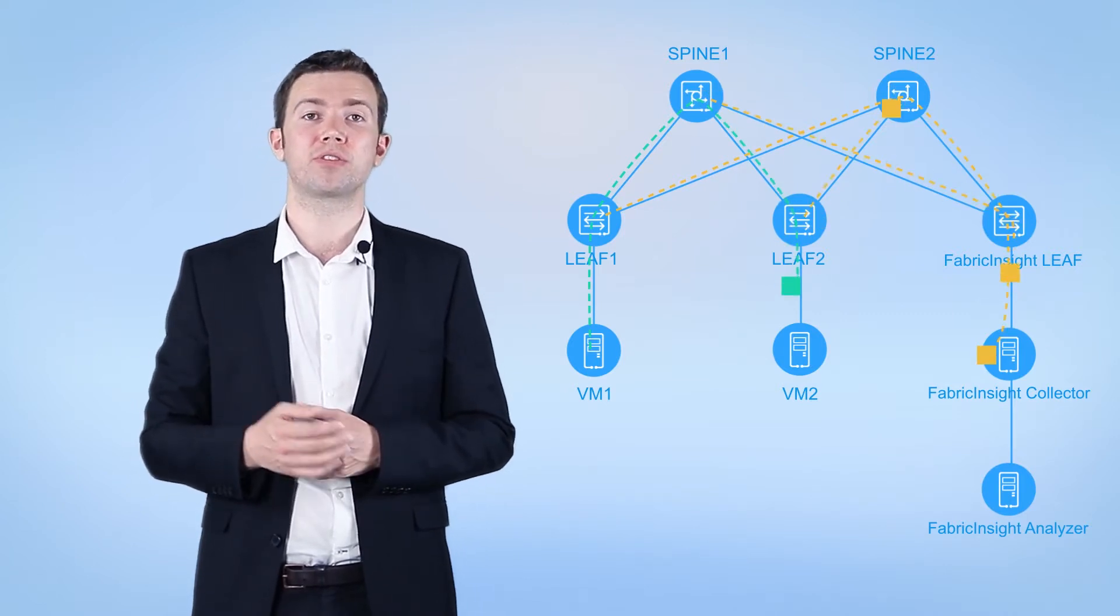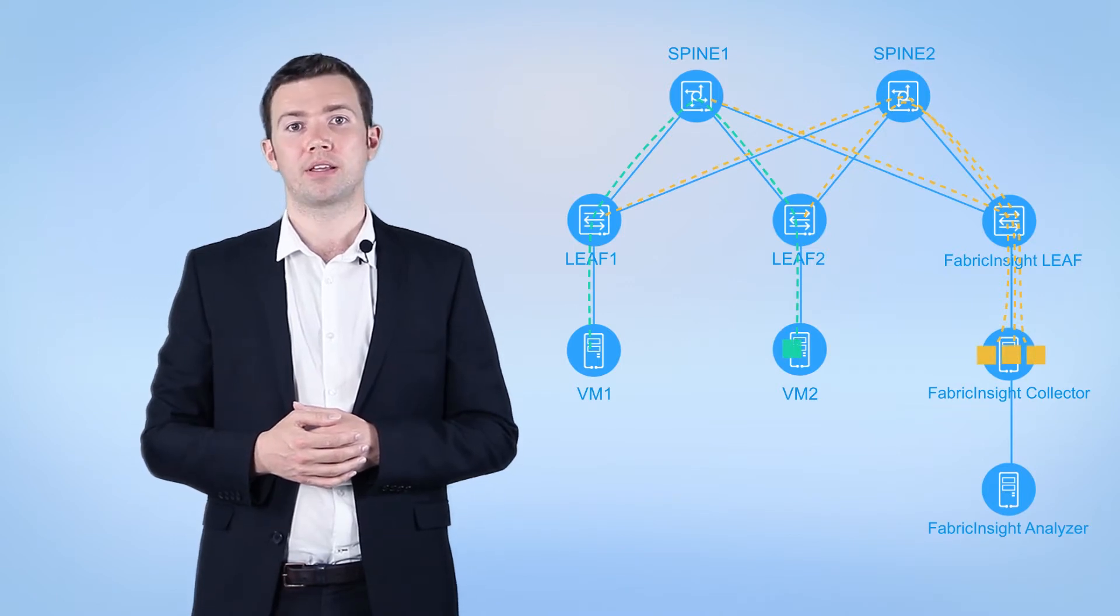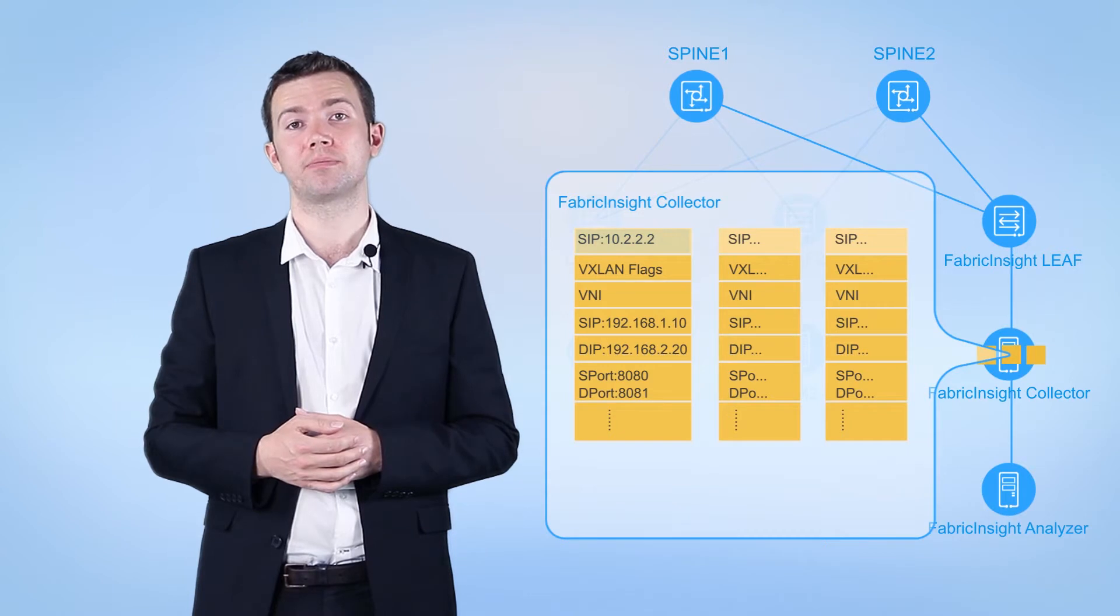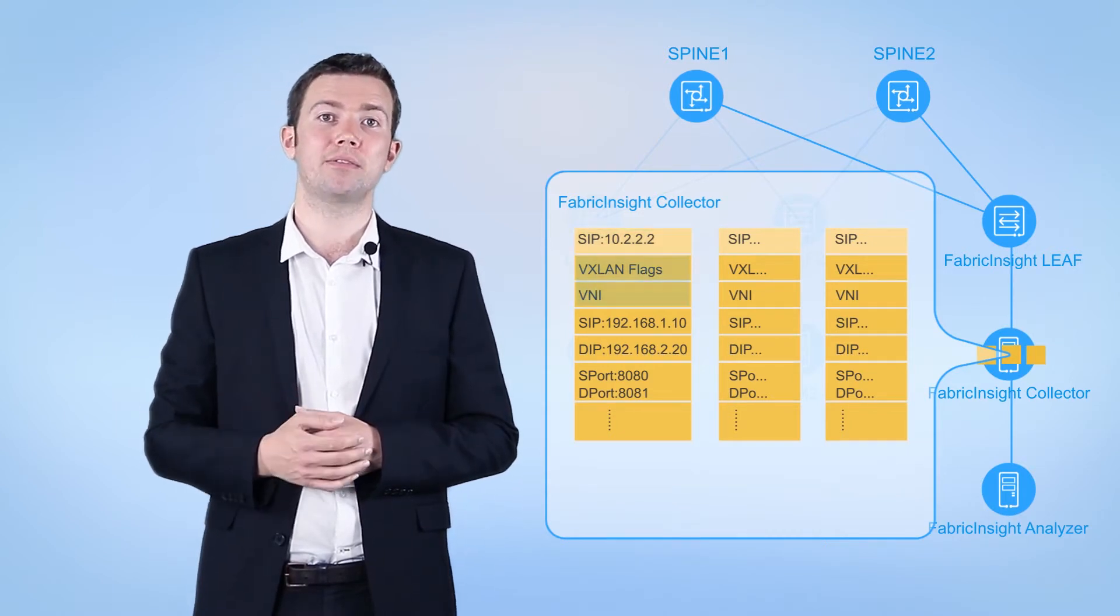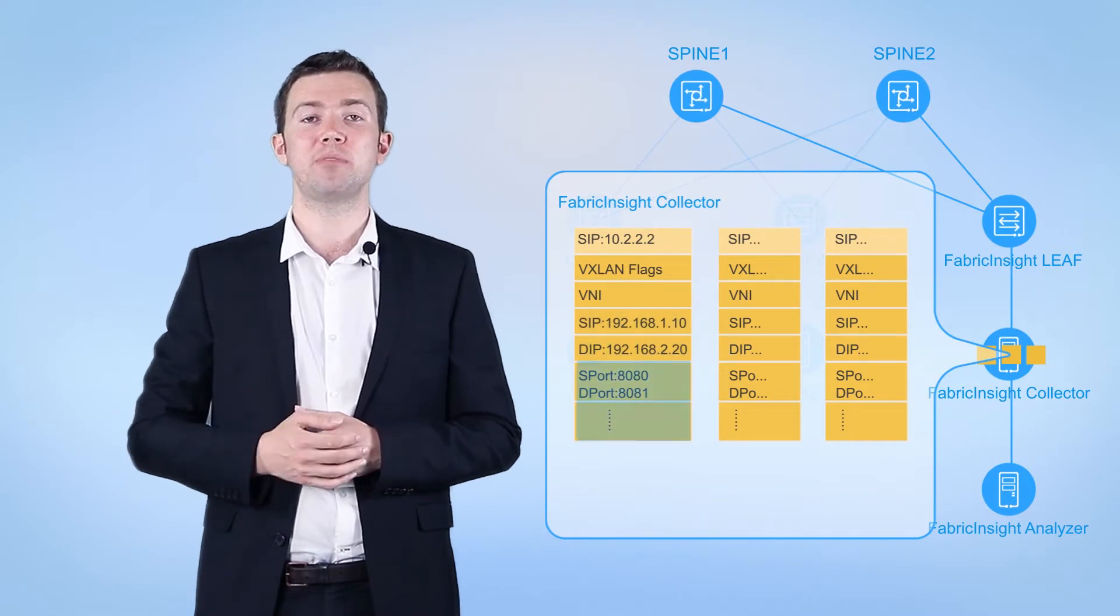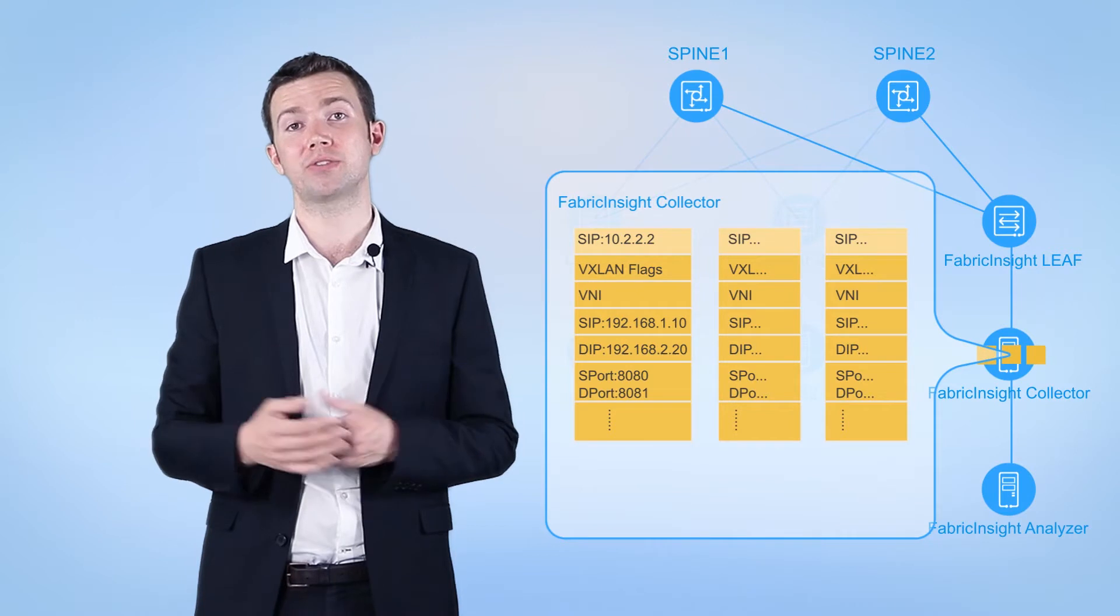The packet is mirrored from the three switches to the Fabric Insight collector. The mirrored packets contain the ER-SPAN source IP address, VXLAN packet header, IP packet header, and TCP packet header. You can figure out the forwarding route of the packet based on this information.